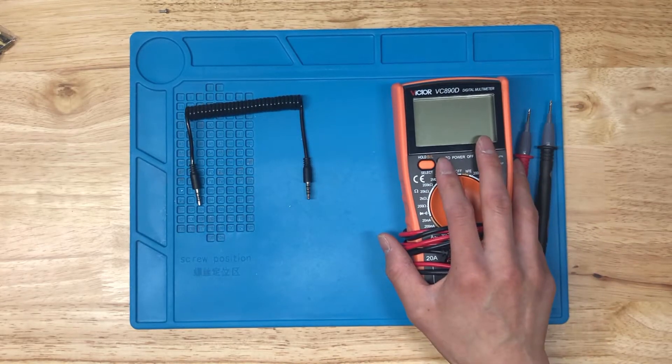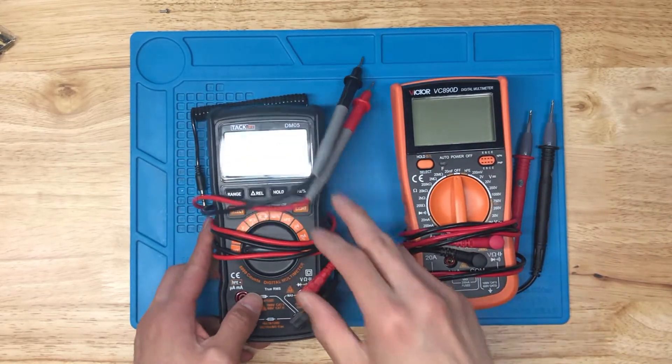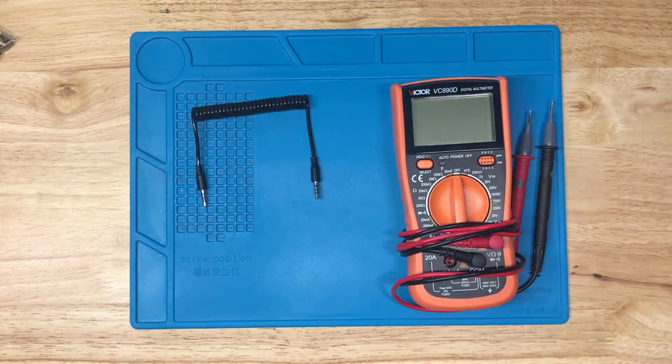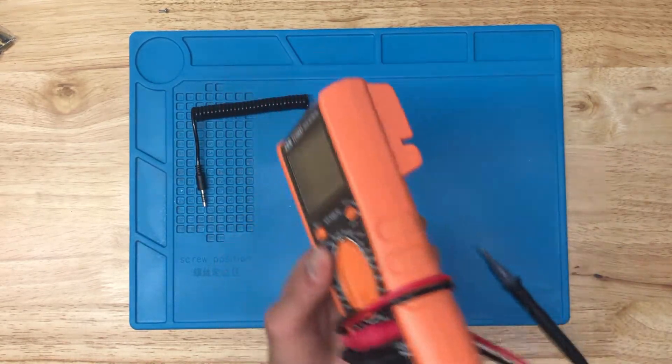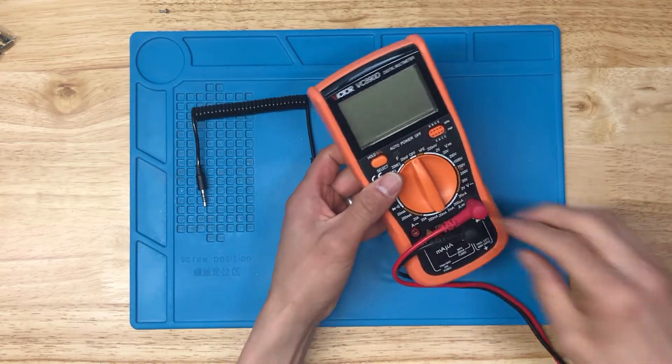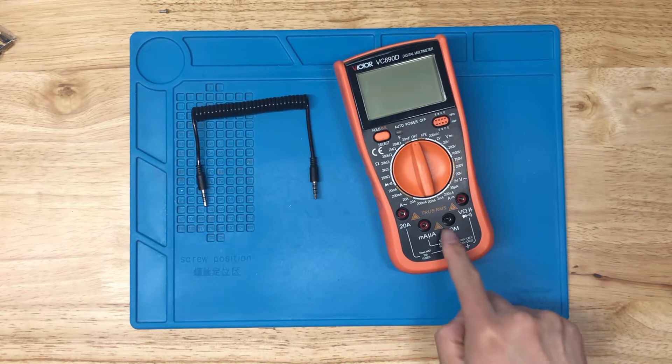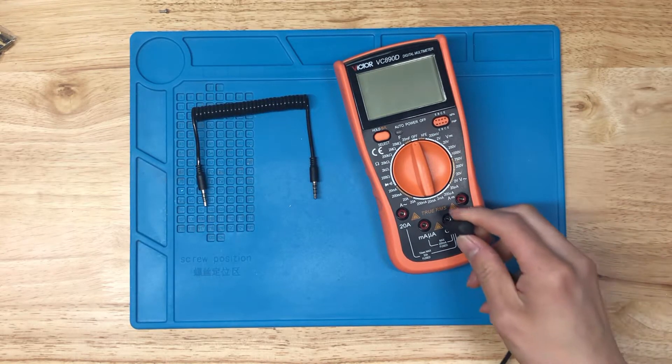Right here I've got this one multimeter. I've got another one here as well that I'll show later. I'm going to unplug these cables here. First of all, I've got this one black terminal here. It says COM, so that's pretty much ground, so we'll plug that in.